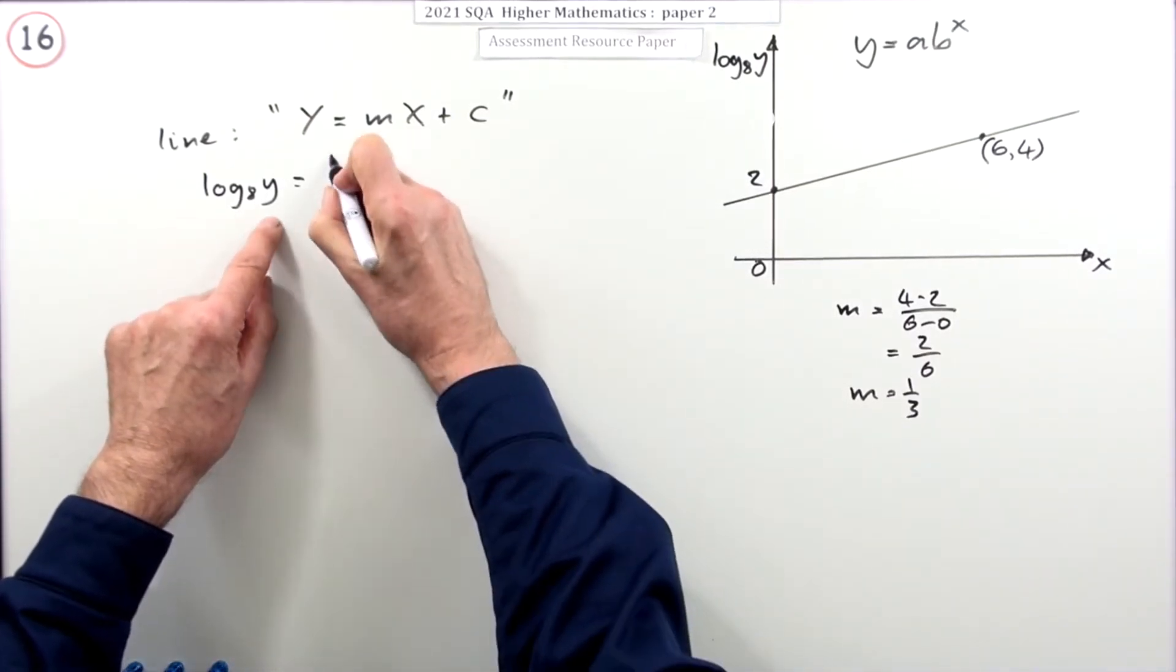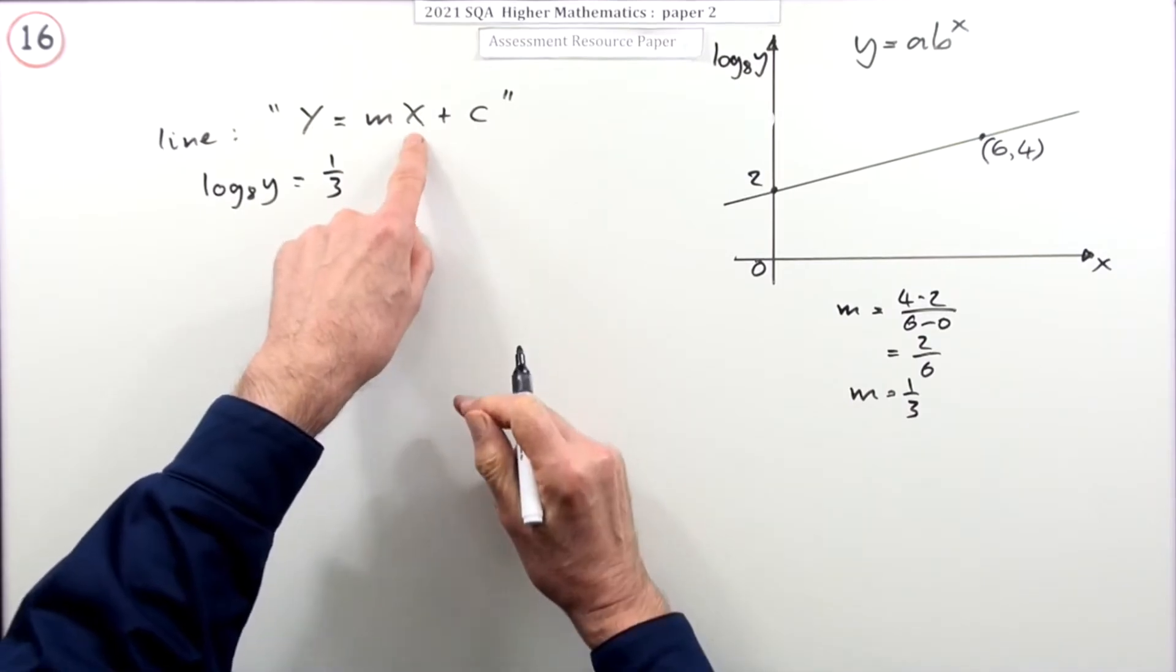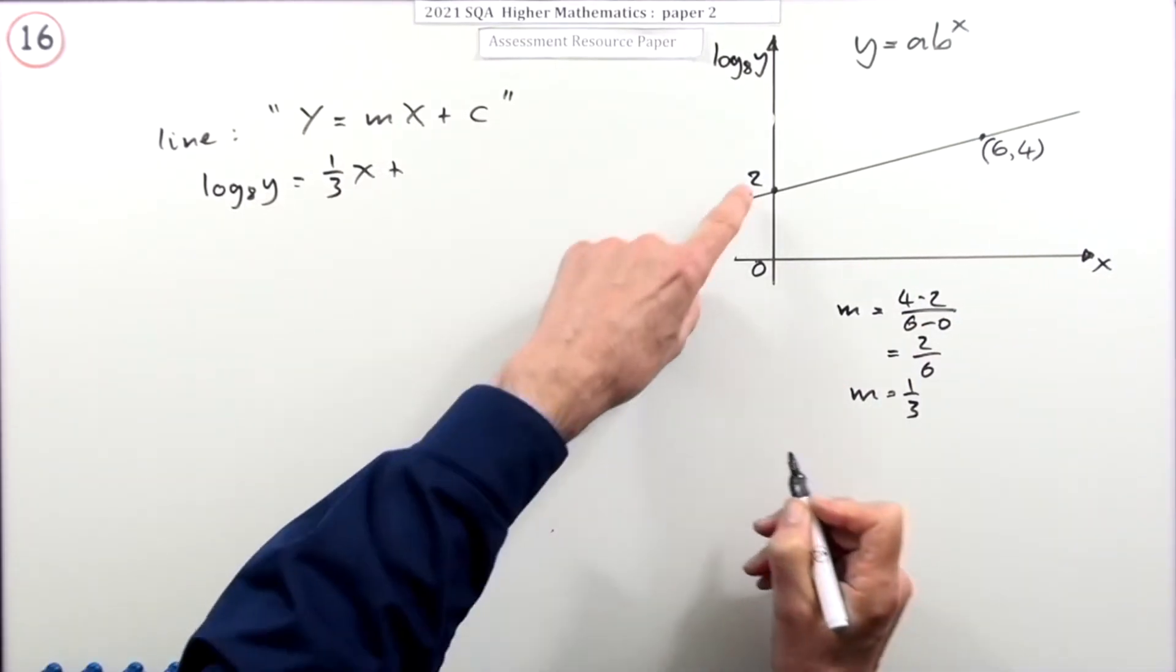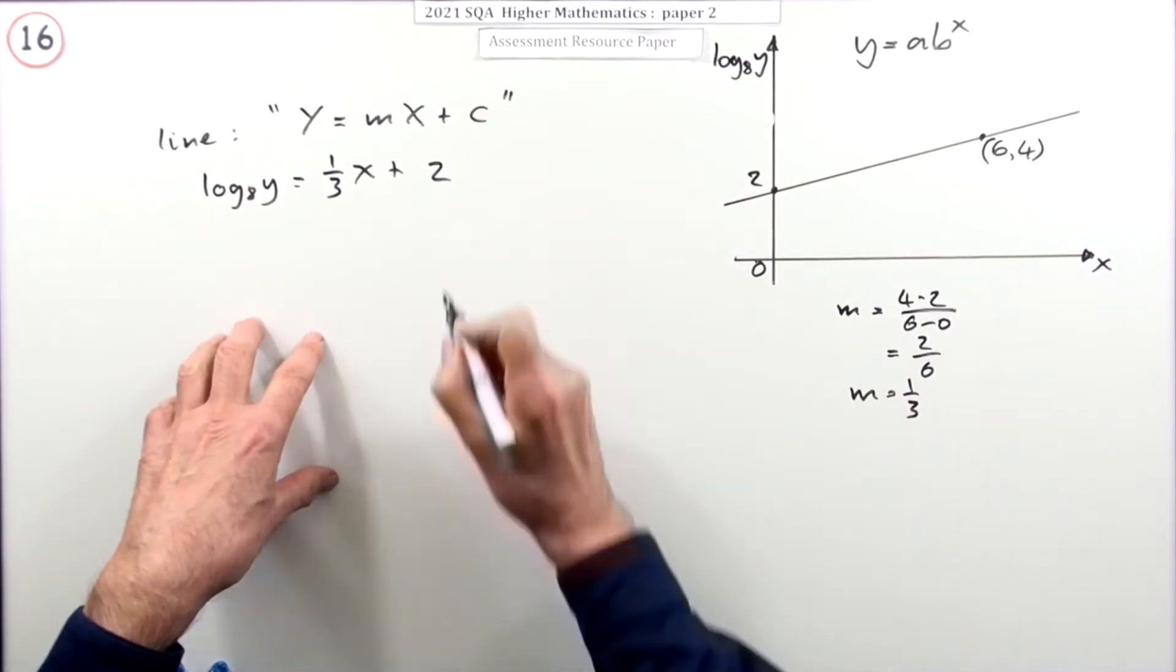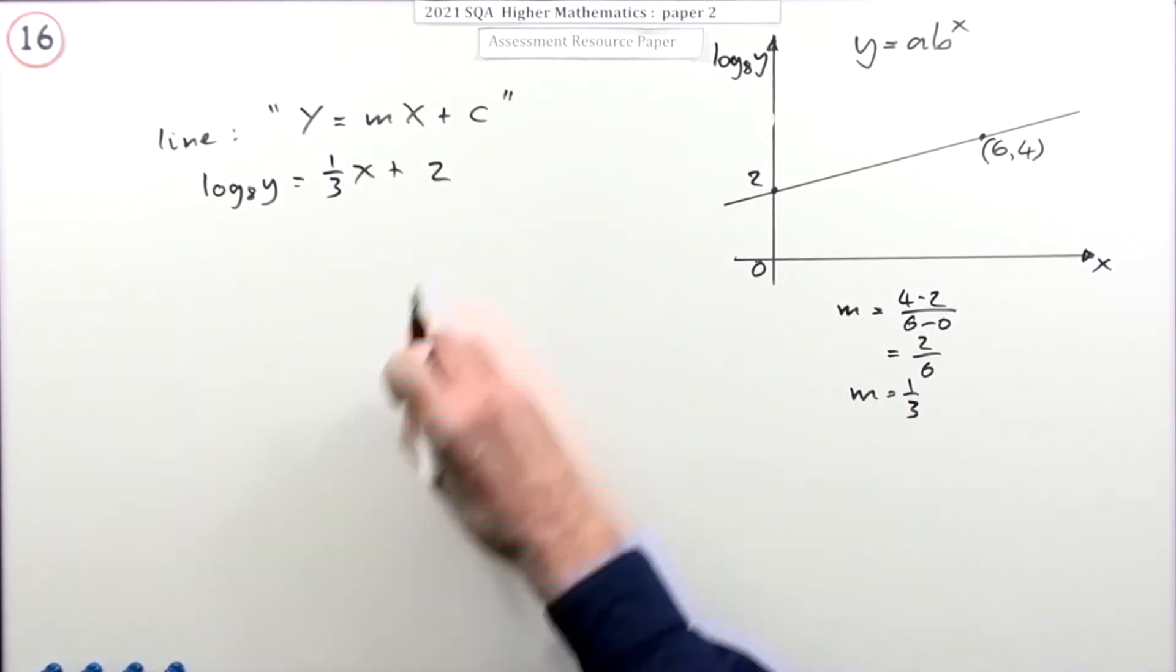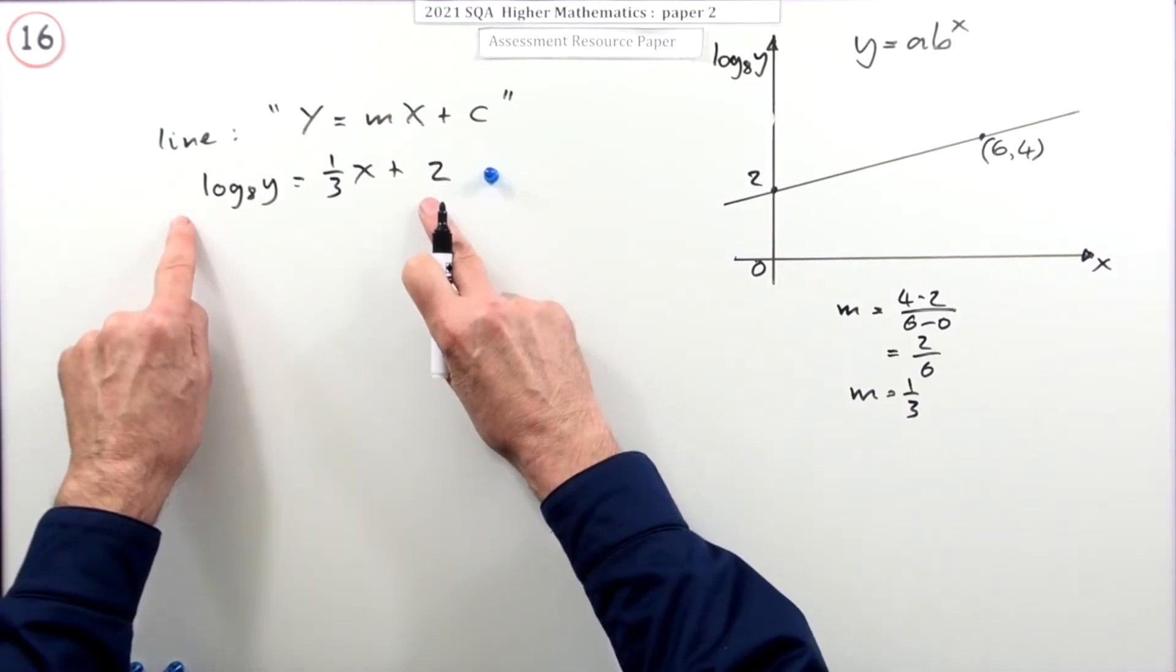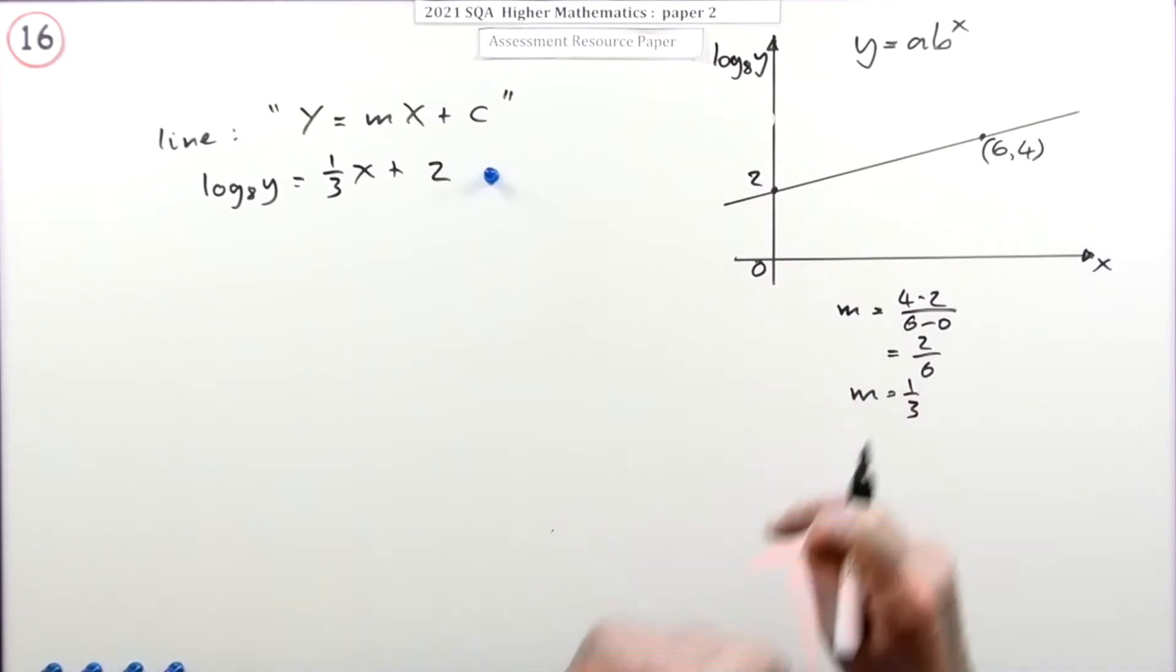So, log eight Y is a third of whatever it says along the way. And it is just X. So, a third of X plus, where does it cut? At two. That would be the first part. And that's the first mark. Get the equation of that line.